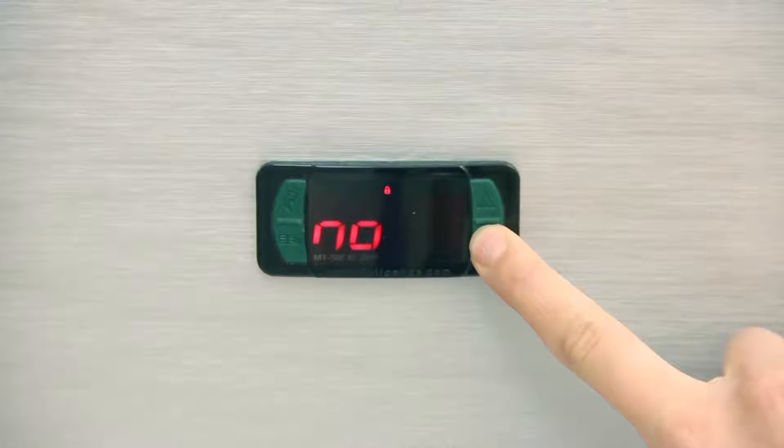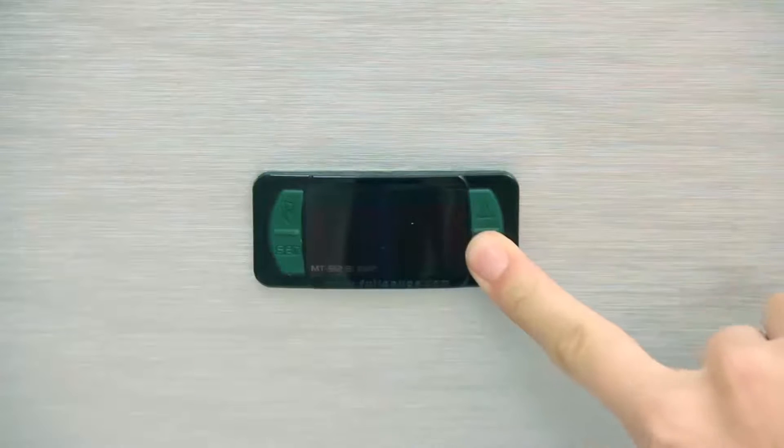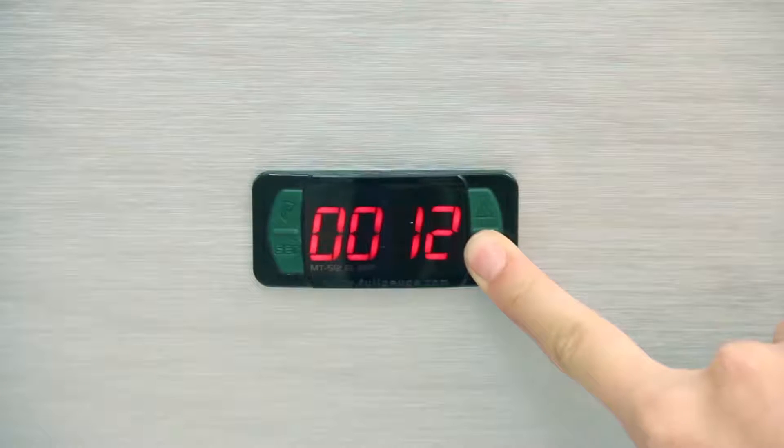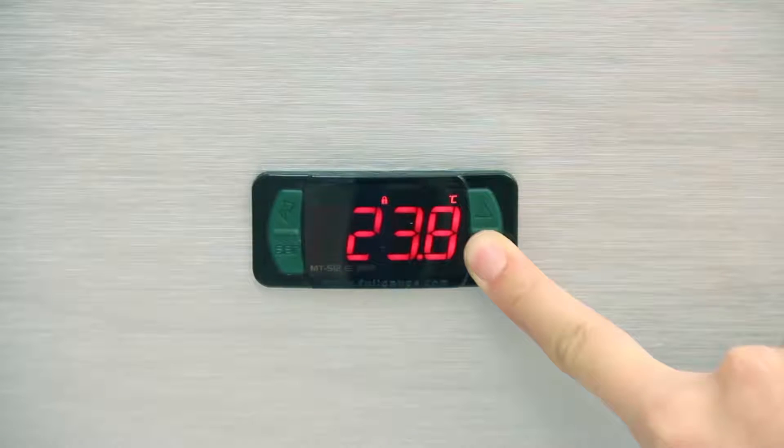When you release the key, the message lock enabled will appear on display. To unlock the functions, restart the controller and press the down key for a few seconds. When you release it, the parameters can be reissued.